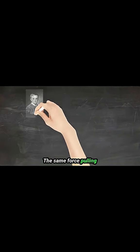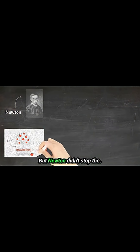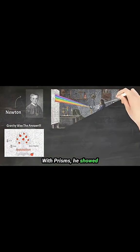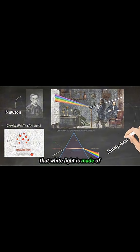The same force pulling apples keeps planets in orbit. But Newton didn't stop there. With prisms, he showed that white light is made of colors.